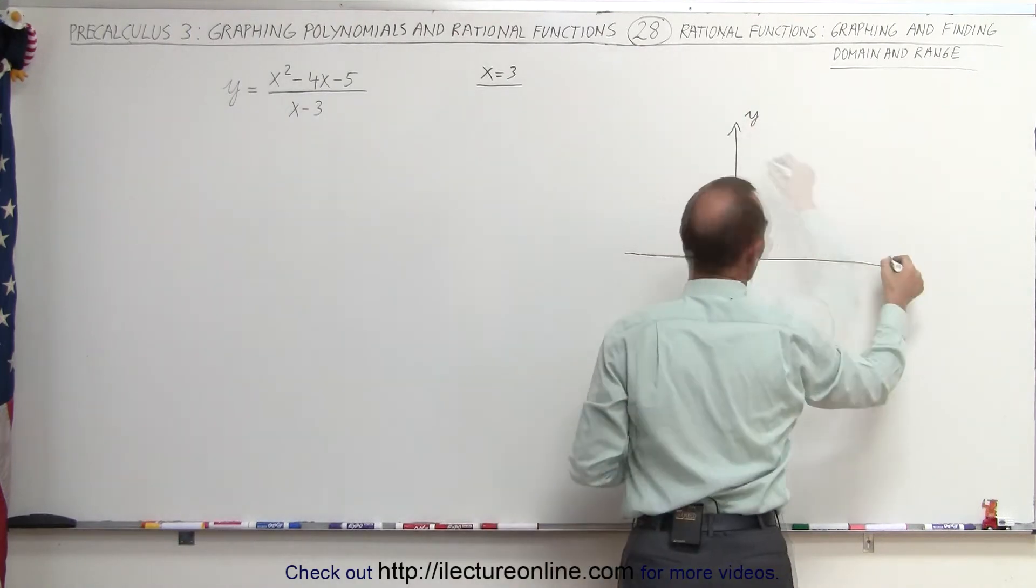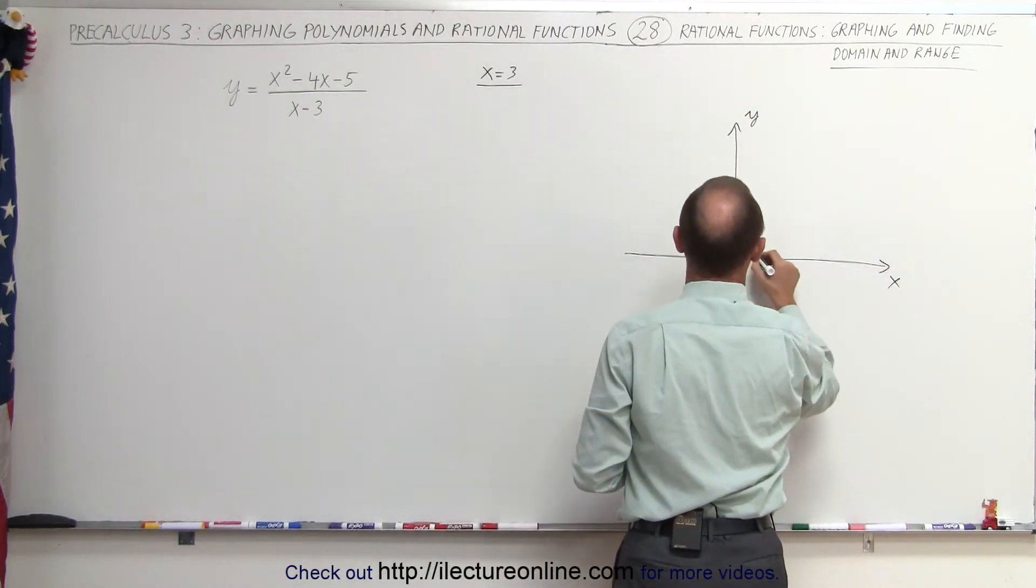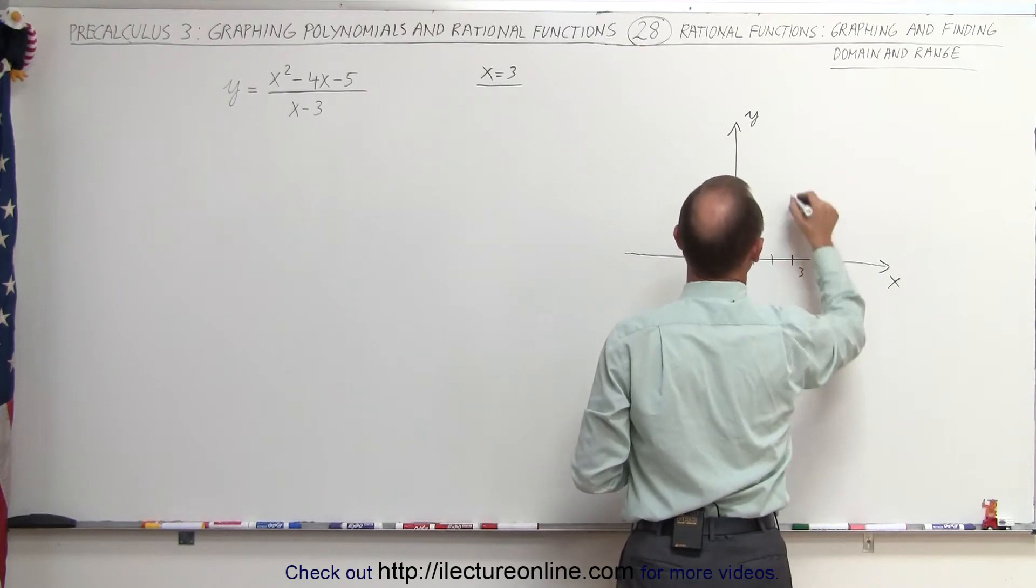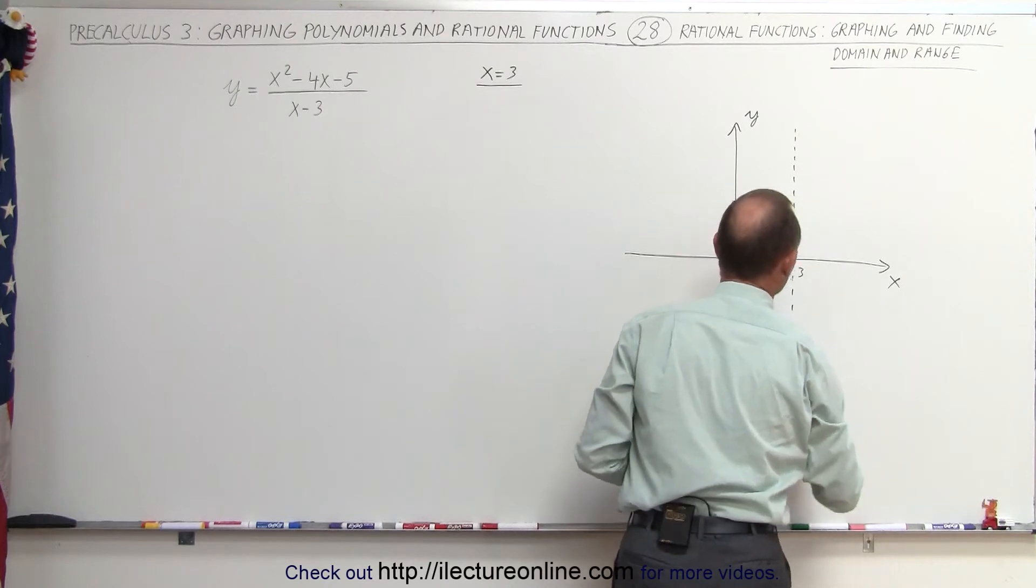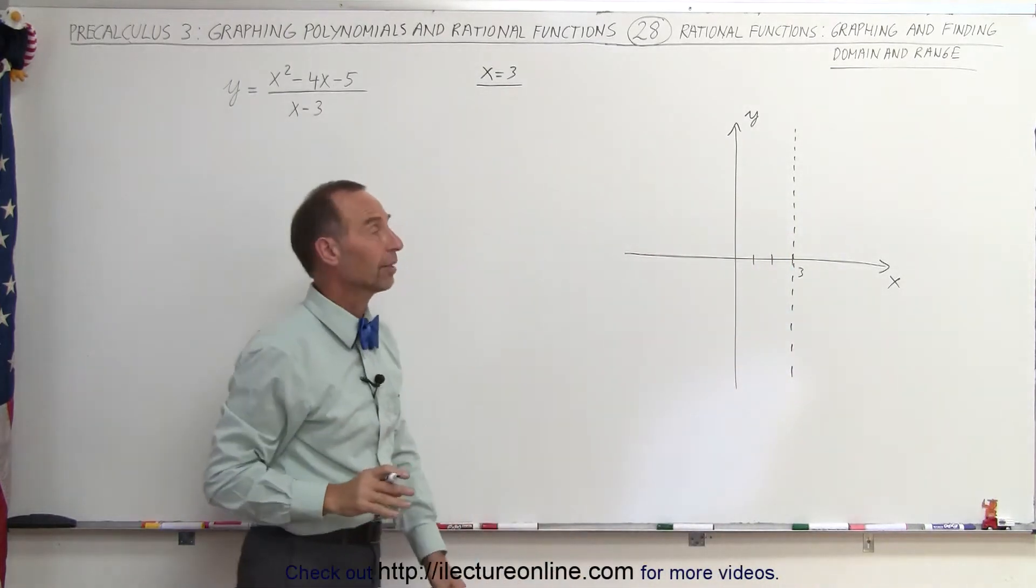Here's our y-axis, here's our x-axis. So 1, 2, 3, x equals 3, that's where we find the vertical asymptote. And we already know that the graph will not cross that vertical asymptote.